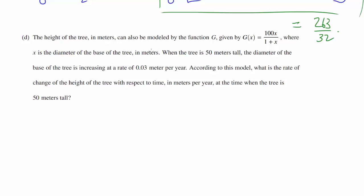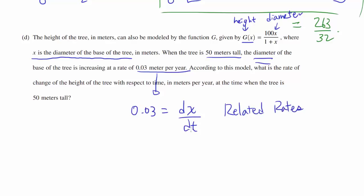The height of the tree in meters can be modeled by the function G, given by G(x) = 100x/(1+x), where x is the diameter of the base of the tree. So we are relating the height, which is G, to x, which is the diameter. When the tree is 50 meters tall, the diameter of the base of the tree is increasing at the rate of 0.03 meters per year. So we know the rate of change of the diameter with respect to time is 0.03. We know we are looking at a related rates problem. According to this model, what is the rate of change of the height of the tree with respect to time at the time when the tree is 50 meters tall?